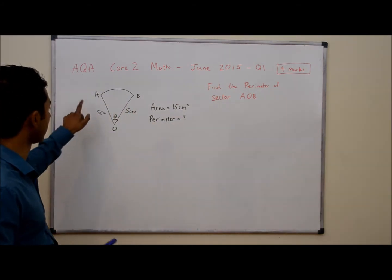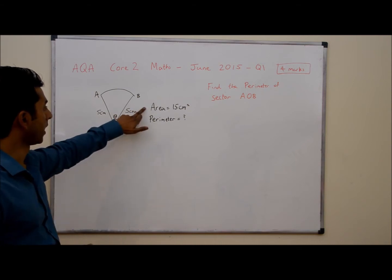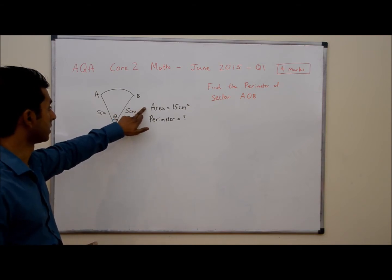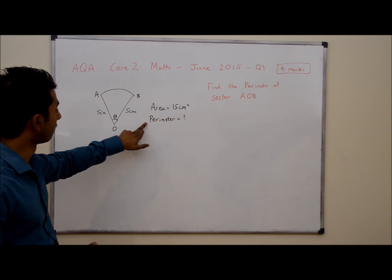It says find the perimeter of sector AOB. A diagram of sector AOB is given. We know the area is 15 centimeters, so that's also given to us. Find the perimeter.